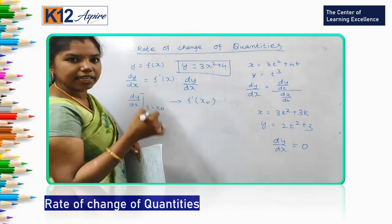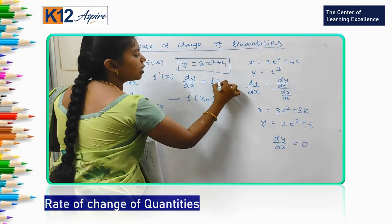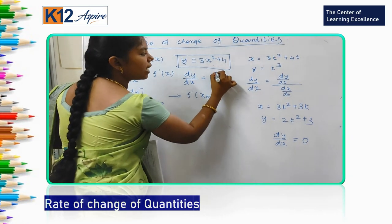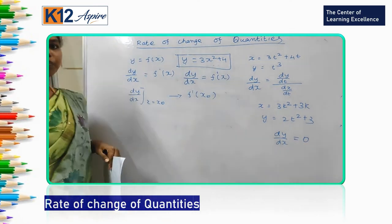This dy by dx we can also write as - this y we can write as f of x, dy by dx we can write as f dash of x.